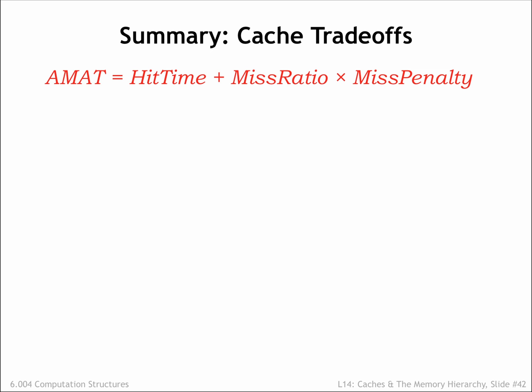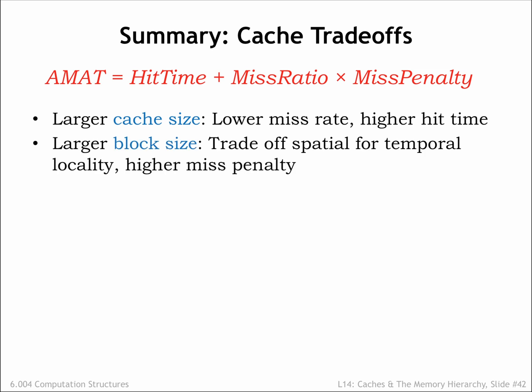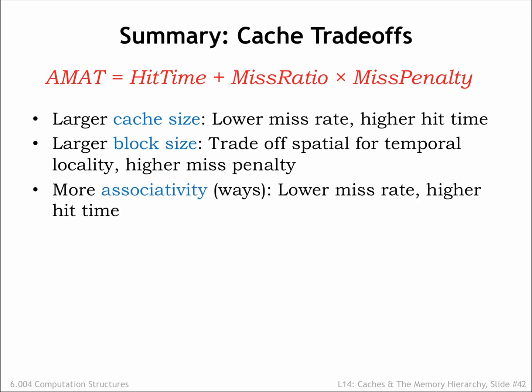That concludes our discussion of caches, which was motivated by our desire to minimize the average memory access time by building a hierarchical memory system that had both low latency and high capacity. There were a number of strategies we employed to achieve our goal. Increasing the number of cache lines decreases average memory access time by decreasing the miss ratio. Increasing the block size of the cache let us take advantage of the fast column accesses in a DRAM to efficiently load a whole block of data on a cache miss. The expectation was that this would improve average memory access time by increasing the number of hits in the future as accesses were made to nearby locations. Increasing the number of ways in the cache reduced the possibility of cache line conflicts, lowering the miss ratio.